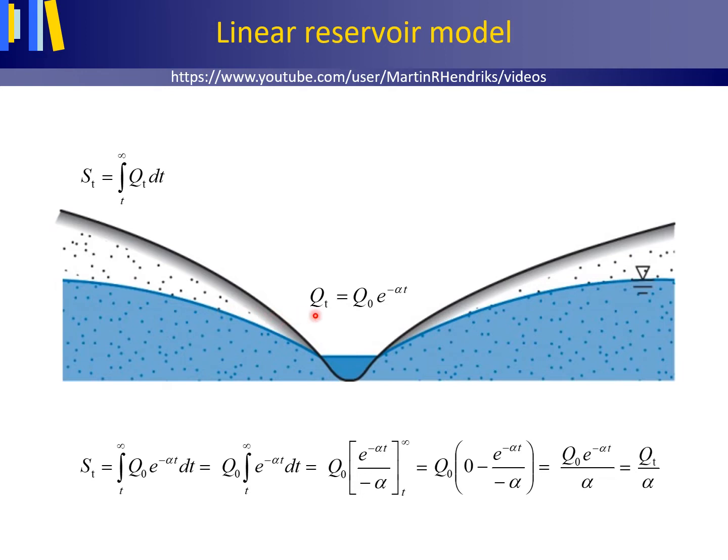The discharge Q t at time t after the start of the recession can mathematically be described as an exponential decrease, with Q 0 being the discharge at the start of the recession in cubic meters per second, thus at the hydrograph peak, t equals 0 seconds, e is the base of natural logarithms 2.71 etc., alpha is the recession constant per day, and t is time in days.